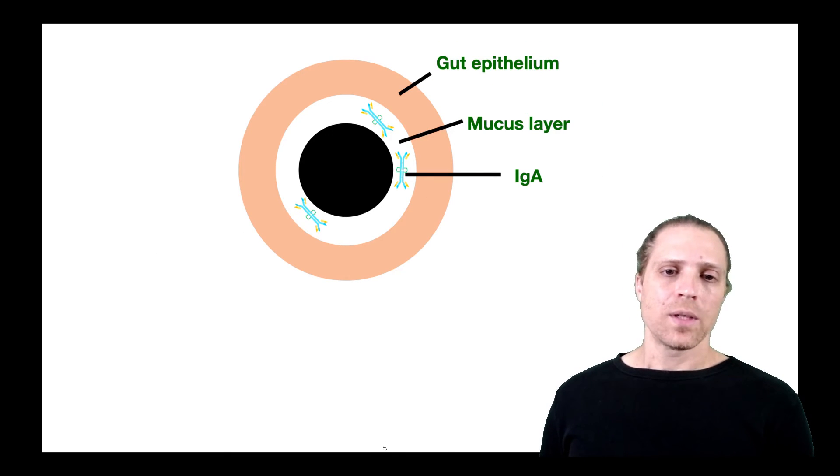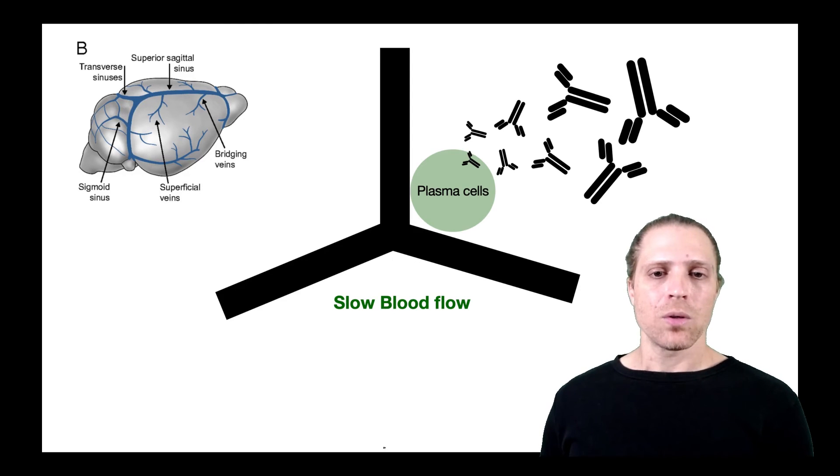And therefore, to understand the role of these plasma cells, we need to understand that, for example, in the gut epithelium that you can see here in this scheme, there are plasma cells that secrete IgA. These IgAs are then secreted to the mucus layer of the gut in order to serve as the first line of defense against pathogenic microbes that could otherwise penetrate into the gut epithelium. So a similar role is being played by plasma cells in the blood vessels of the meninges.